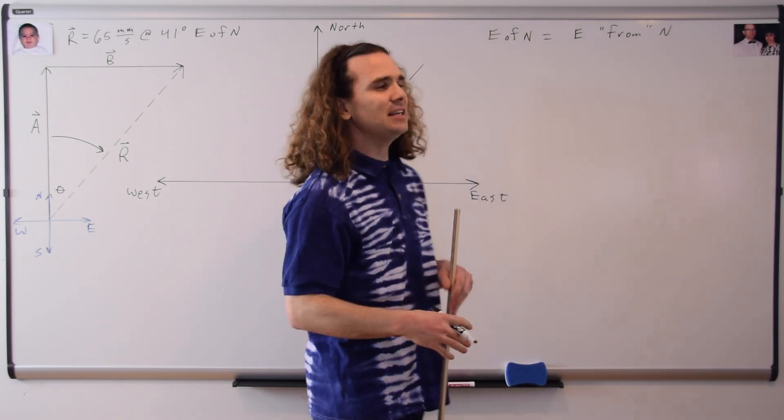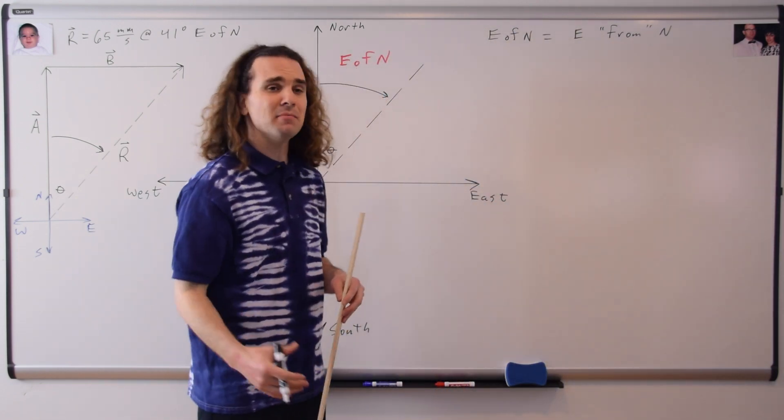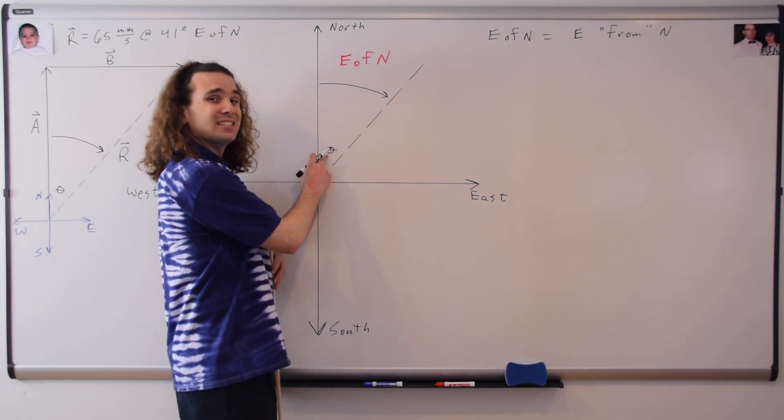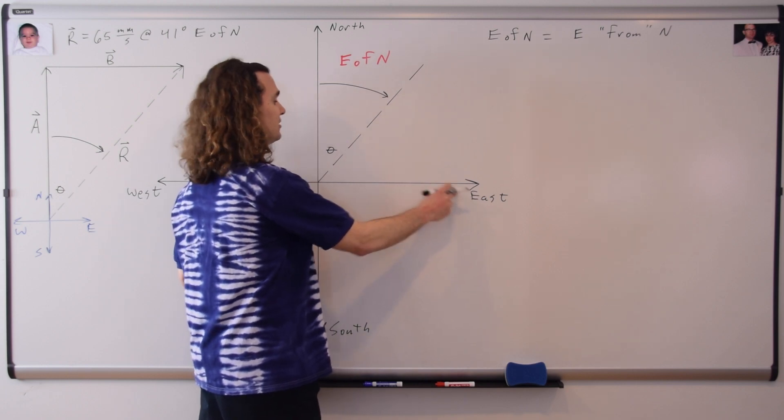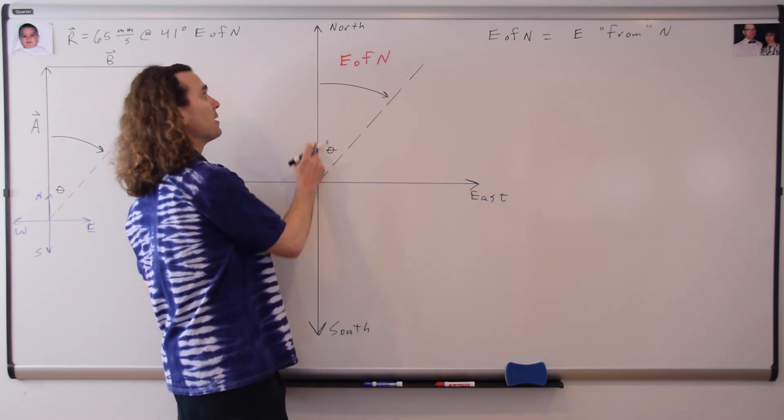I do think that people find it easier rather than thinking of it as of, but rather from, because that's what the of means in this particular case. This angle theta is 41 degrees east from north. In other words, you're moving the direction of east from the northward direction. Eastward from north.